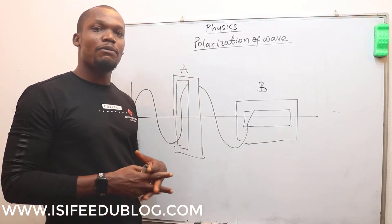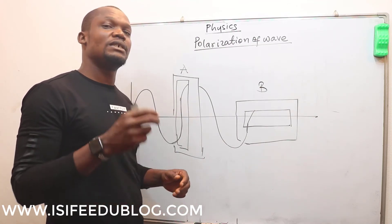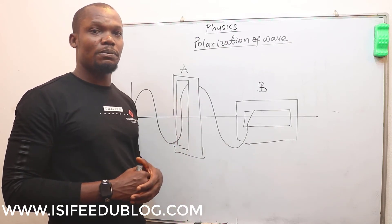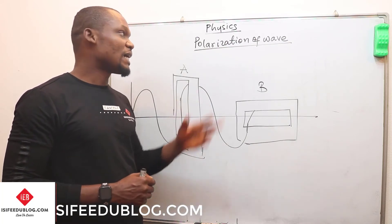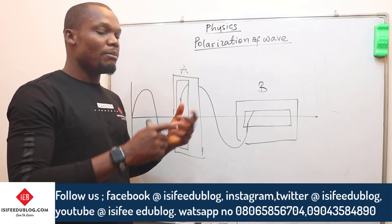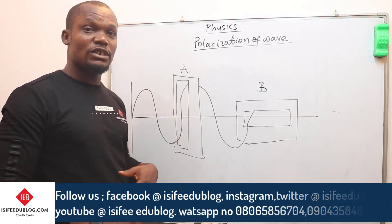And a good example of a longitudinal wave is a sound wave, as we mentioned at the beginning of this topic. So we can now say that therefore sound cannot be polarized, but light, which is a transverse wave, can be polarized.